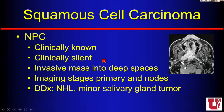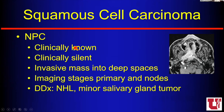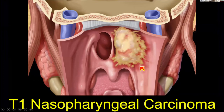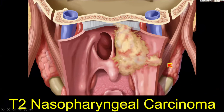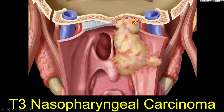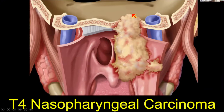Nasopharyngeal carcinomas may be clinically silent and can be very invasive as they go into the deep spaces of the neck. The differential includes lymphoma or minor salivary gland carcinoma, but usually it's squamous cell carcinoma. Squames of the nasopharynx, called nasopharyngeal carcinoma, are very chemoradiation sensitive, so we often reserve surgery for very bulky disease or recurrence. For staging: small is T1; going out into the parapharyngeal fat is a higher stage; invading the skull base is automatically T3; going through the skull base is automatically T4.